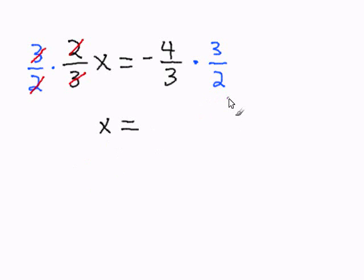Now, we simply multiply these two fractions: negative 4 over 3 and 3 over 2. The 3s cancel out, and the 4 and 2 will be reduced to 2 over 1.